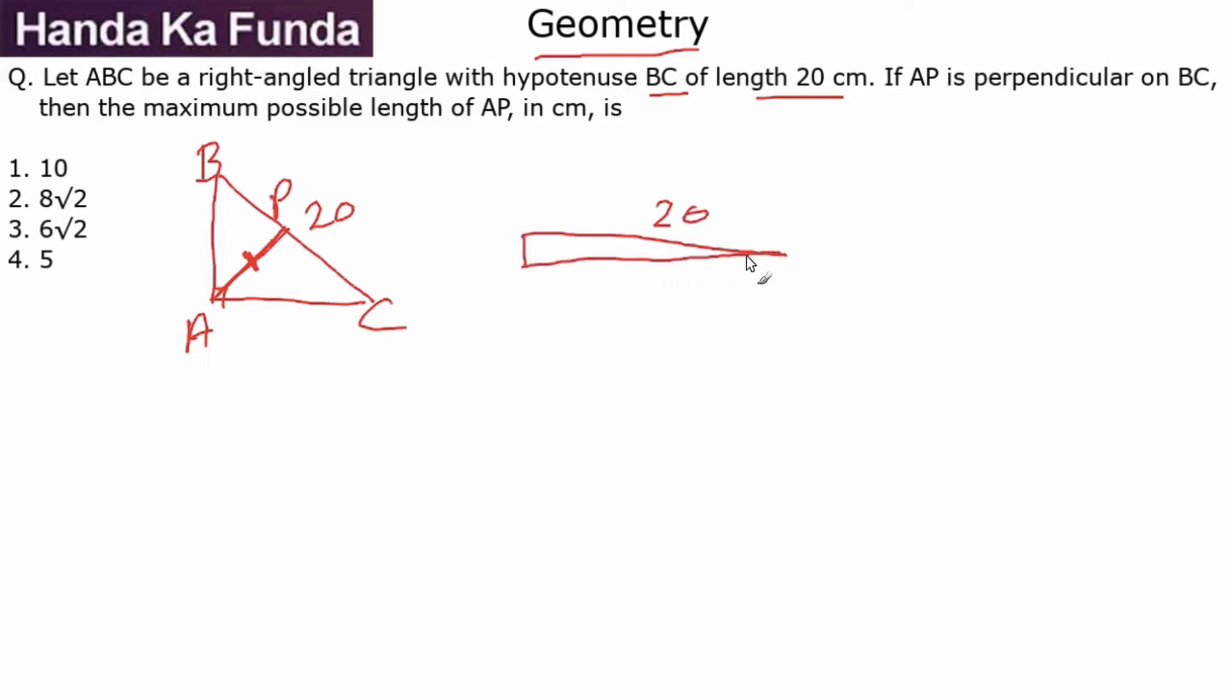and my right angle is something like this where one side is very small and the other side is very long, in that case the length of AP or the perpendicular from here to here would be small.